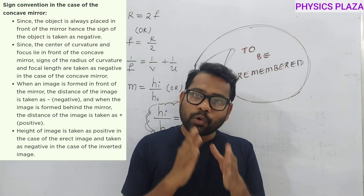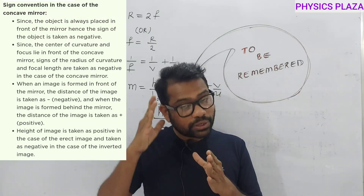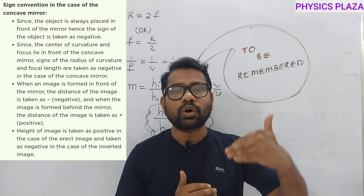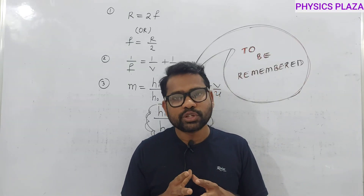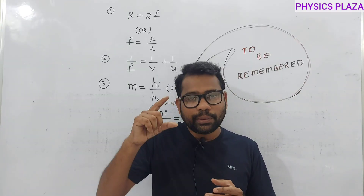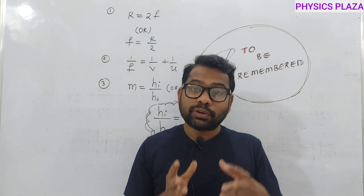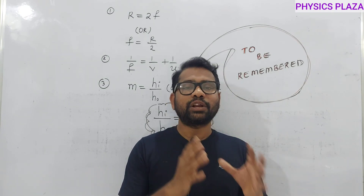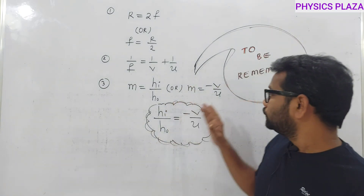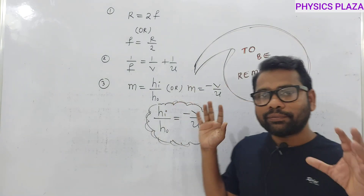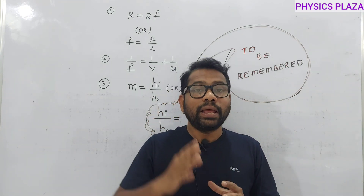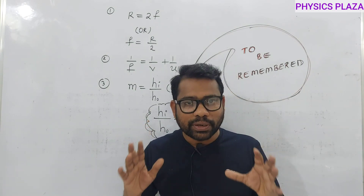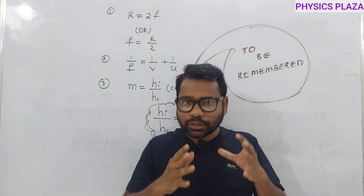As per the sign convention rules, irrespective of the mirror type, the object distance is always negative. The focal length of a concave mirror is always negative, whereas the focal length of a convex mirror is always positive. For a virtual image, the image distance and image height are positive, whereas for a real image, the image distance and image height are negative.